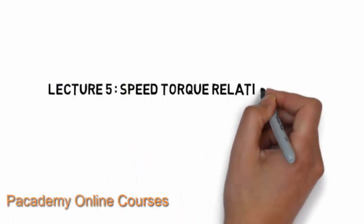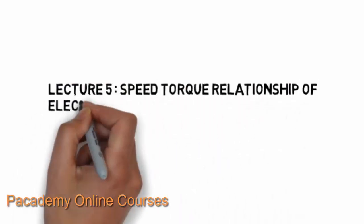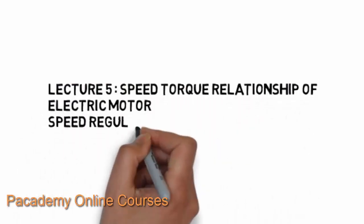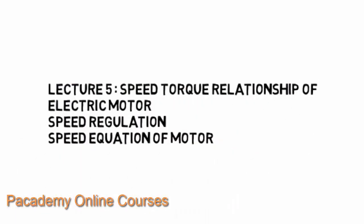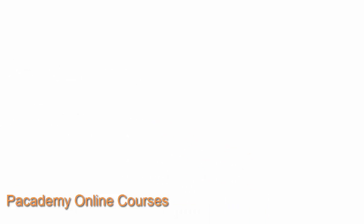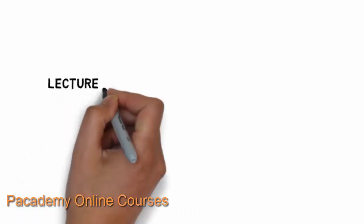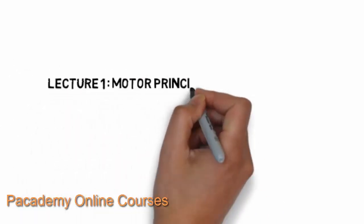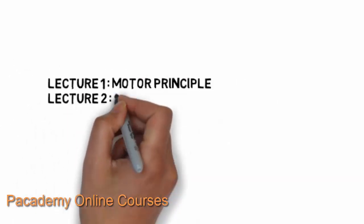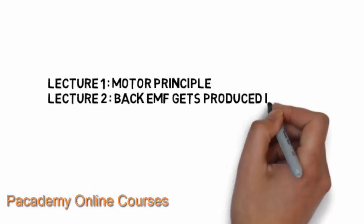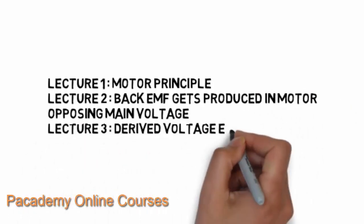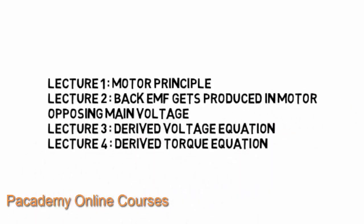This is Lecture 5, in which we will derive the torque-speed relationship of an electric motor, also speed regulation and the speed equation of an electric motor. Lecture 1 was about the motor principle, Lecture 2 was about the back EMF, the voltage equation of an electric motor, and we also derived the torque equation.